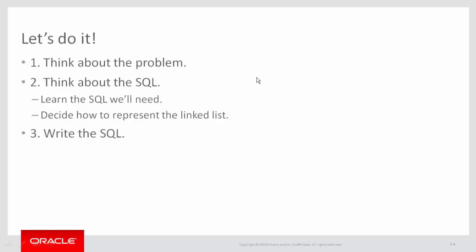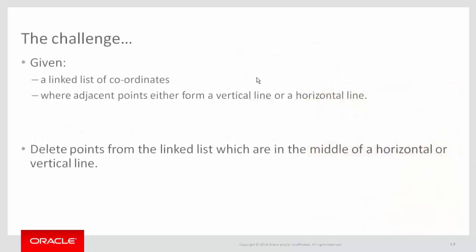First we're going to think about the problem, then we'll think about the SQL, and then we'll write the SQL. I'm going to add an additional criterion that wasn't on the website: no backtracking. This wasn't explicitly spelled out, but judging from the solution posted on the website, we need this. What I mean by no backtracking is I can't go to, for example, 5-10, then 7-10, and then back to 5-10.